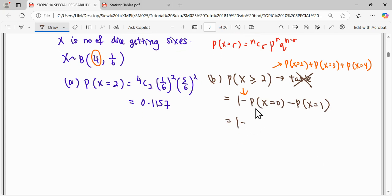For P of X equals zero, it will be 4C0 times one over six to the power zero times five over six to the power four. X equals one is 4C1 times one over six to the power one times five over six to the power three. Calculate using calculator: 0.1319.